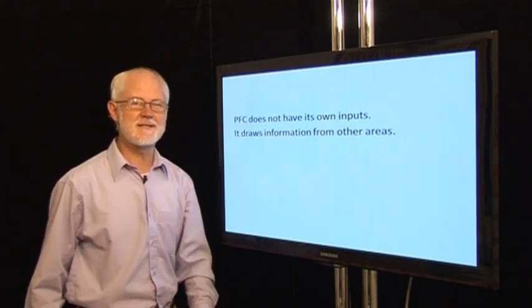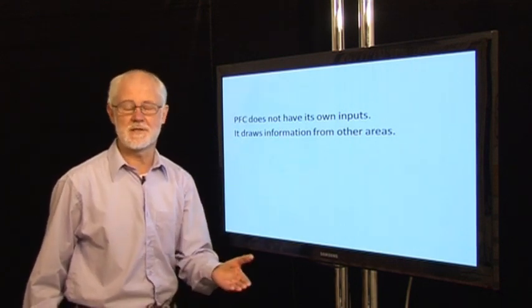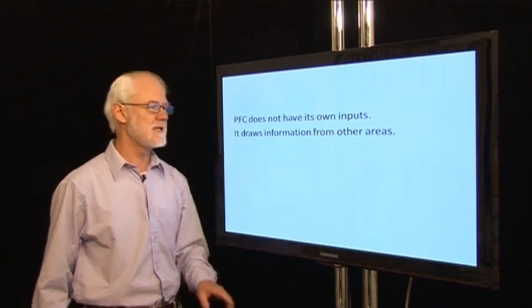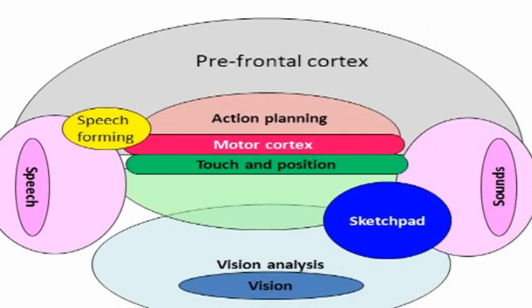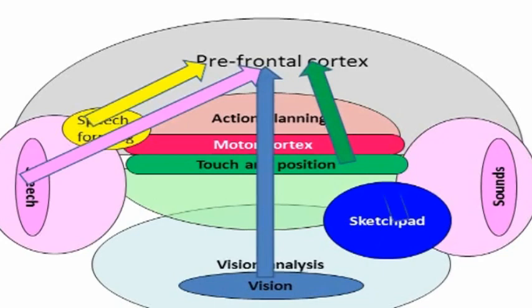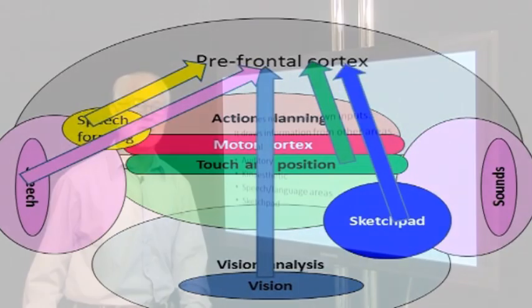The prefrontal cortex doesn't have its own inputs, such as the visual or auditory area for instance. It draws in information from other parts of the brain, such as the visual area, auditory, kinesthetic, speech and language areas, and the sketch pad. In order to do its job, it needs to be able to connect with these areas well.